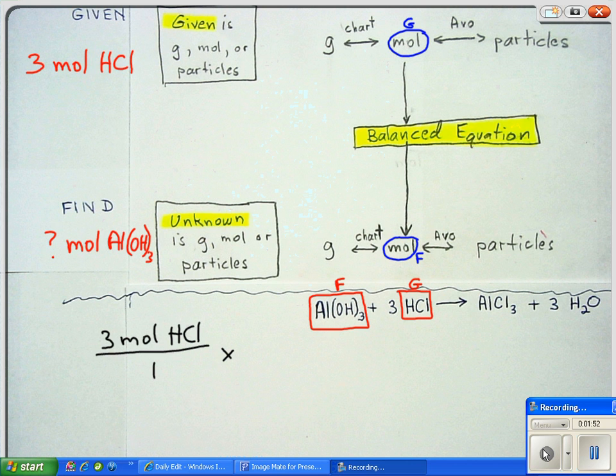Next, we're going to have our mole ratio. Why is that? Because we're starting right up here with the given, and we're coming down, and we're going to need a mole ratio to get us to our moles of the new substance, which will be our aluminum hydroxide.